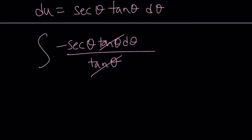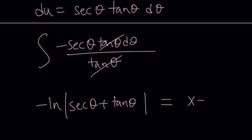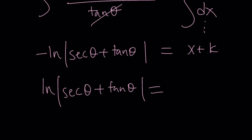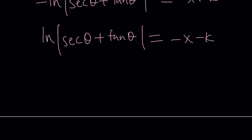The integral of secant theta is the natural log of the absolute value of secant theta minus tangent theta. This is something you can memorize or derive. So we get the negative of that, which equals x plus k on the right hand side — that's the integral of dx we've been carrying along. Multiplying both sides by negative 1 to clean up, we get ln|sec θ - tan θ| equals negative x plus some constant.